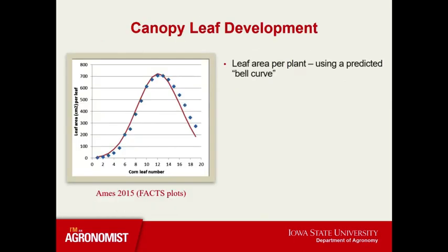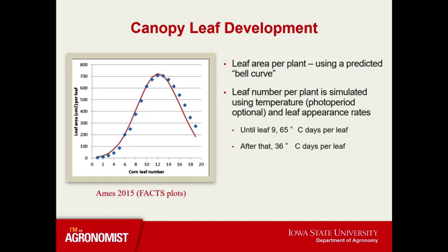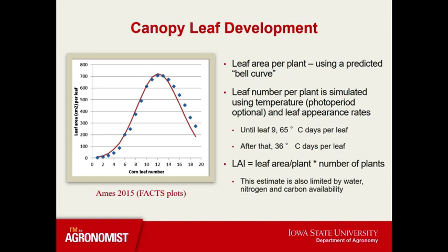Next is canopy leaf development. The model will simulate leaf area per plant using a predefined bell curve, similar to what is shown here in this figure. This is based off of 2015 data from the FACTS experiment, where we have corn leaf number on the x-axis and leaf area per leaf in centimeters squared on the y-axis. The model simulates leaf number per plant using temperature and leaf appearance rates, which can also be made hybrid-specific. Leaf area index is a product of leaf area per plant times the number of plants per meter squared, and this estimate can be limited by water, nitrogen, and carbon availability.